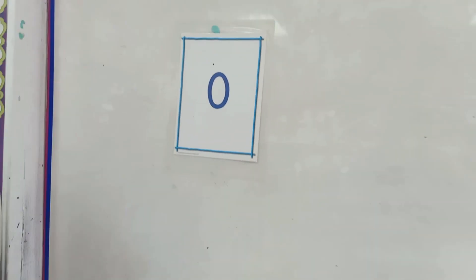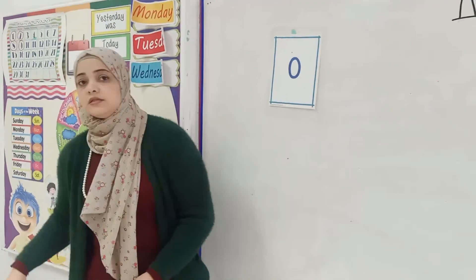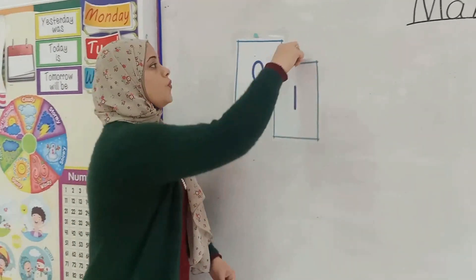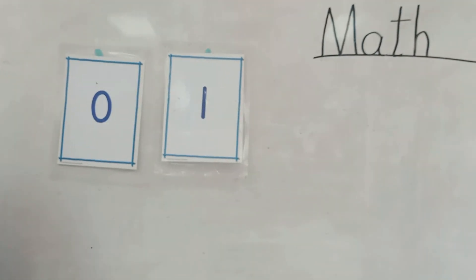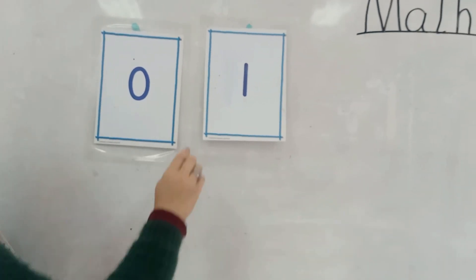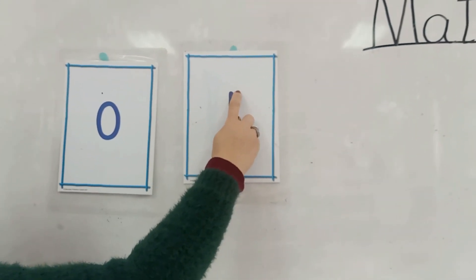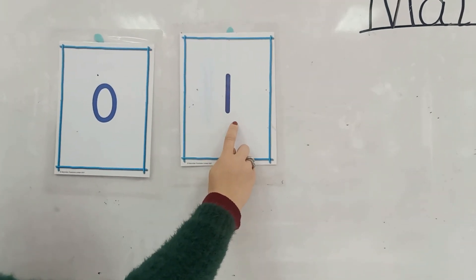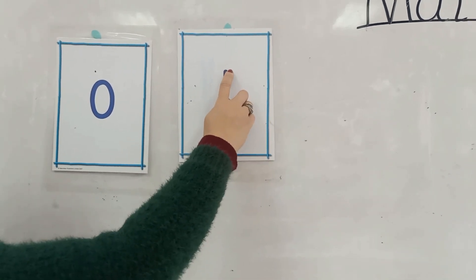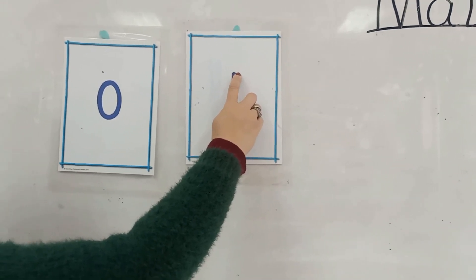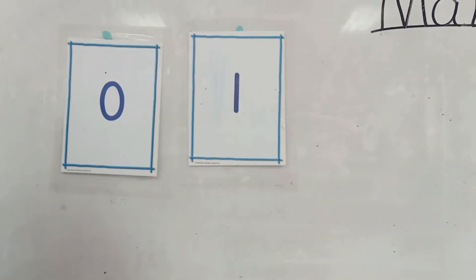What comes after zero? Yes, number one. How do we write number one? Starting point, down in a long stick. Again, starting point, down in a long stick. Excellent.